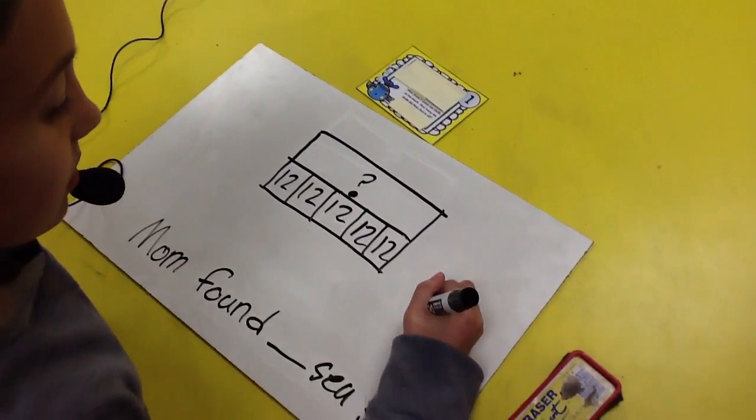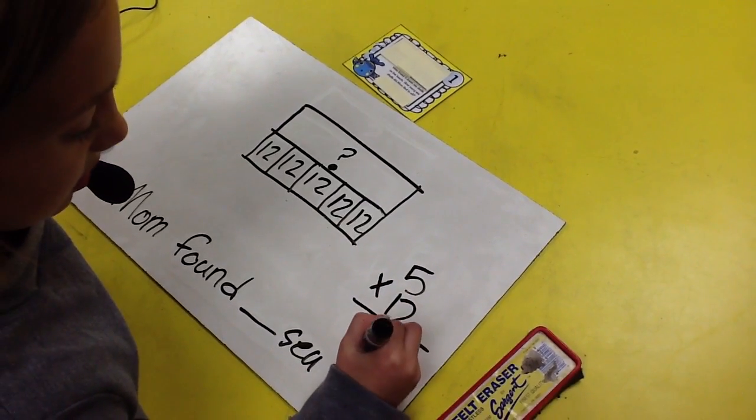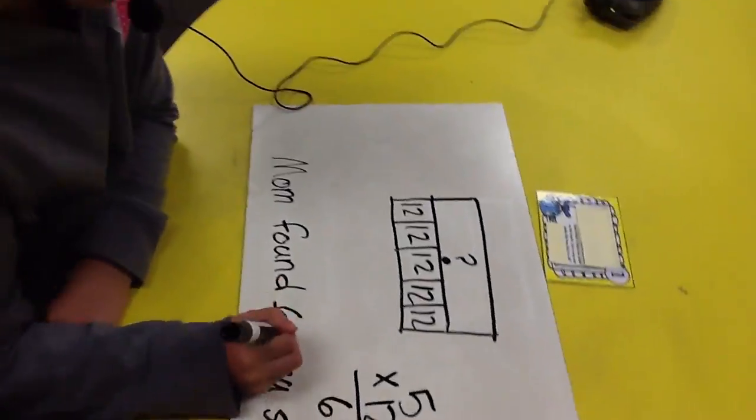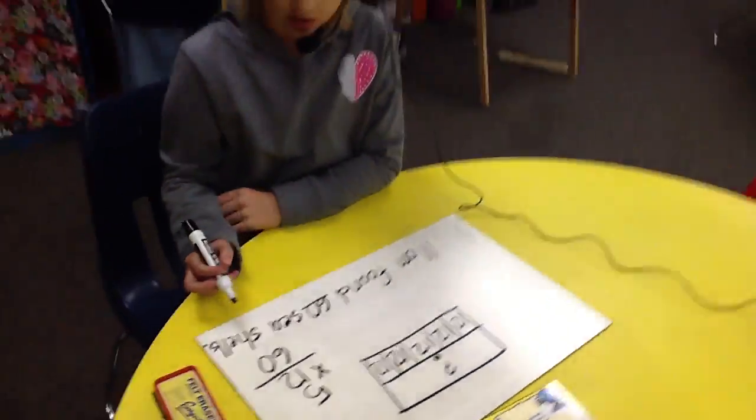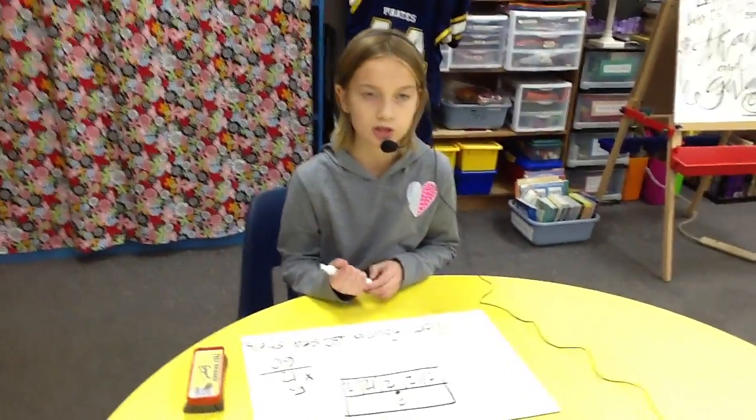So five times twelve equals sixty and so mom found sixty seashells. And that's how to solve a multiplication problem using a strip diagram.